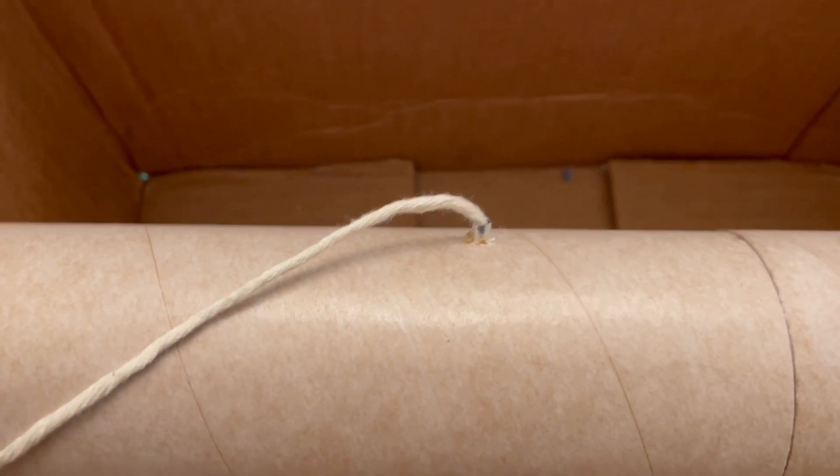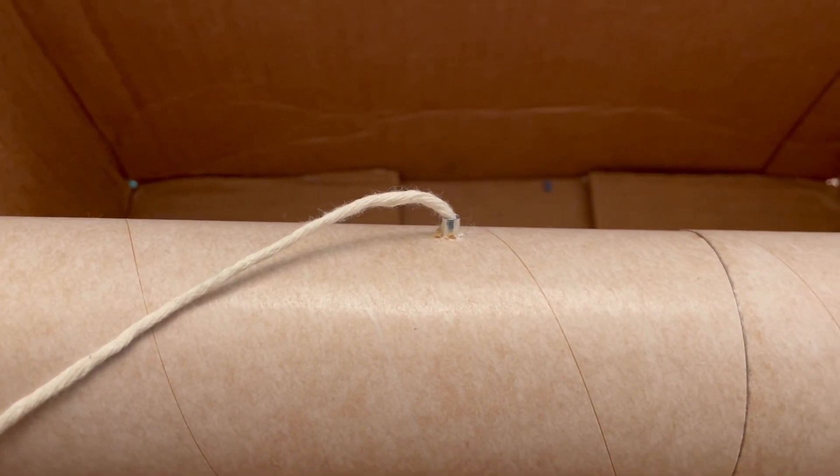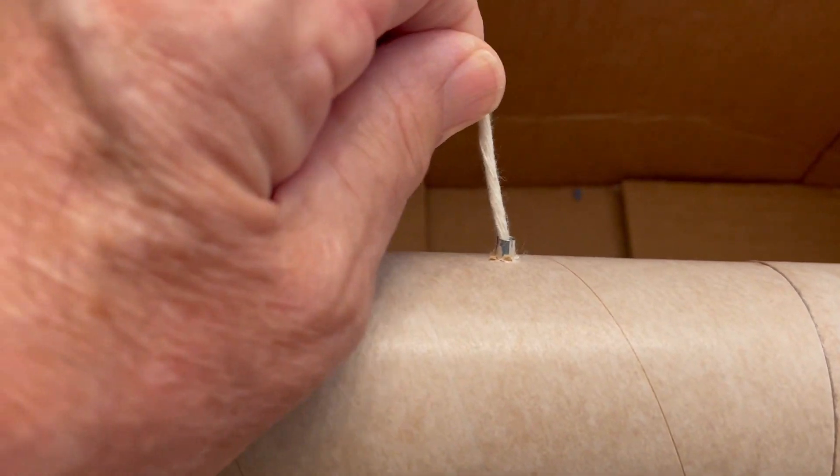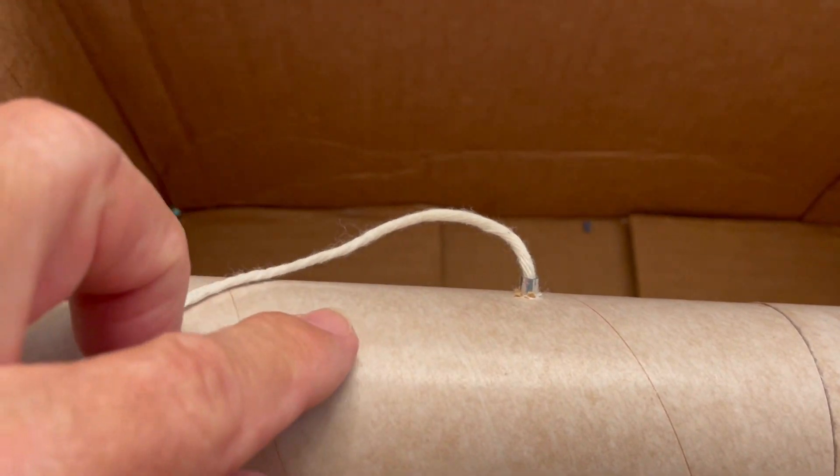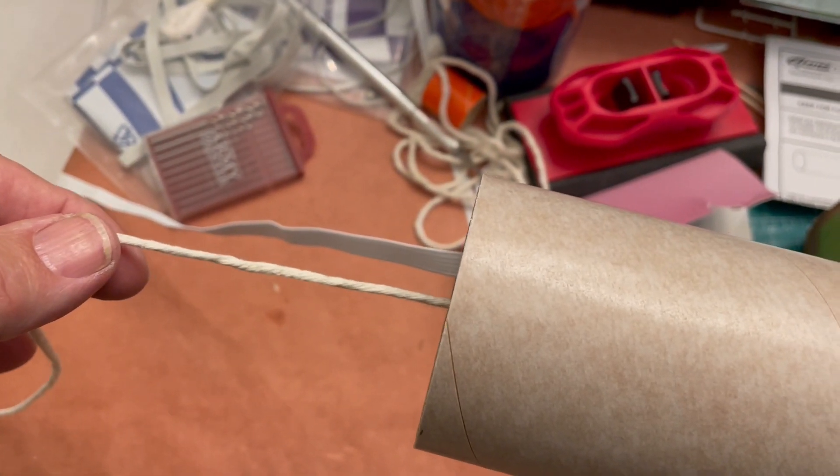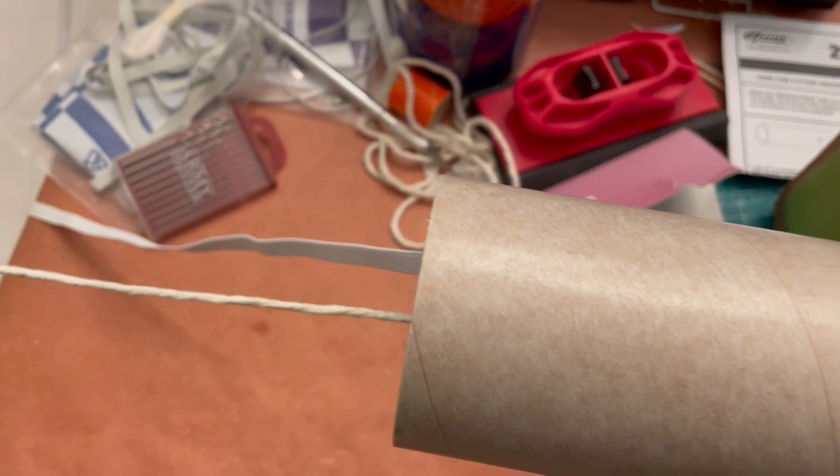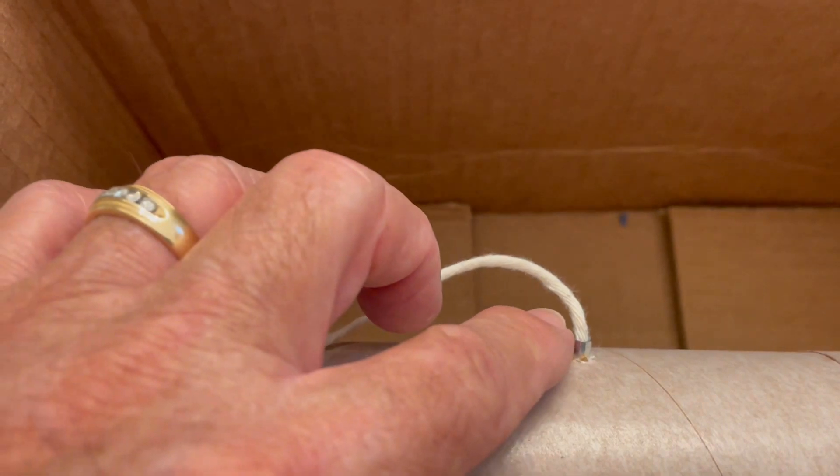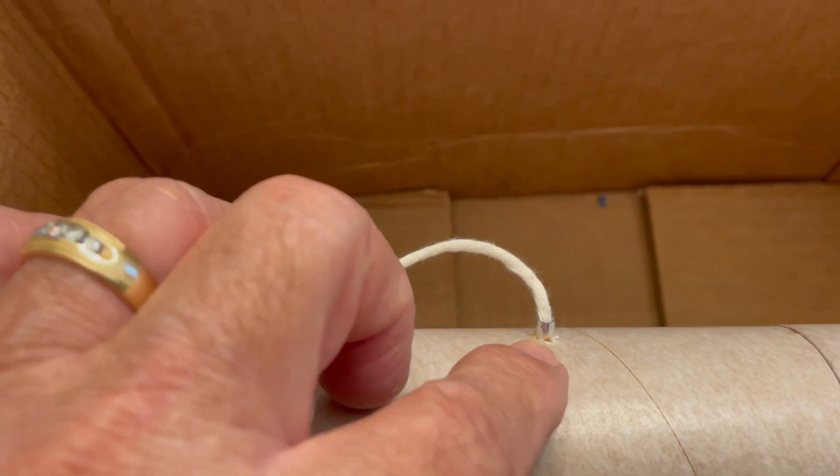So you can see there, I pulled the string until the rail button came through, and I made sure the string was long enough so that I can pull the string out, because the knot's on the opposite side of that rail button.